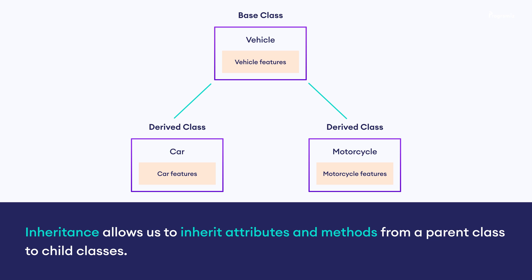In this example, vehicle is our parent or base class, while car and motorcycle are our child or derived classes. By writing programs in this way, we can reuse code that is common for different classes, and it also makes our code easier to use and maintain. Now that we know about inheritance, let's learn how to implement it in Python with the help of examples.